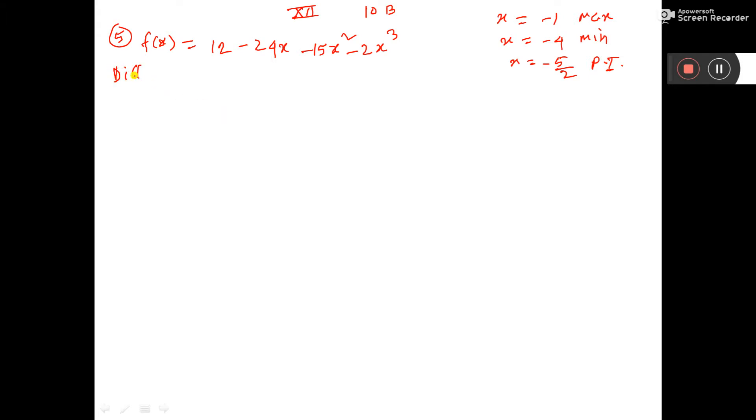So, differentiating both sides with respect to x, f'(x) is equal to... this will be 0, here this will be 24 minus 30x minus 6x². So, again differentiating with respect to x,